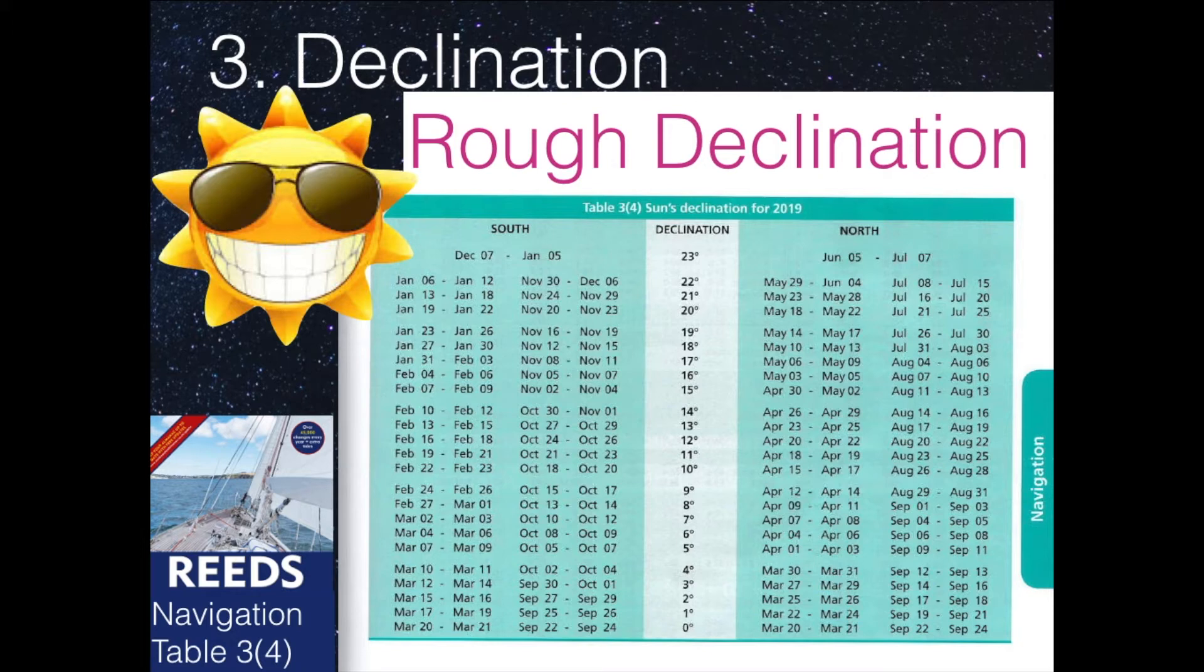It's north in the summer and south in the winter. And you get a declination out of the reeds, which is accurate to one full degree. So if your latitude is good enough for one full degree, you can even use the table here in the Reed's Almanac.